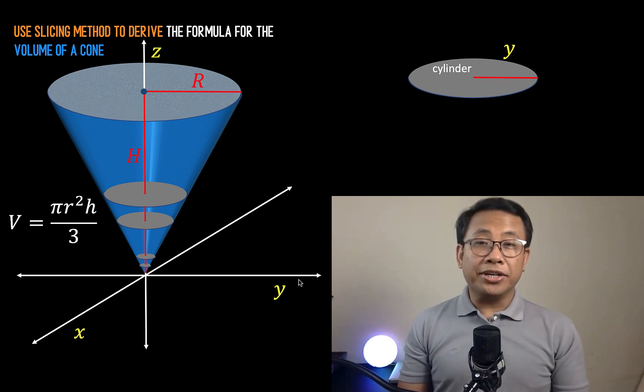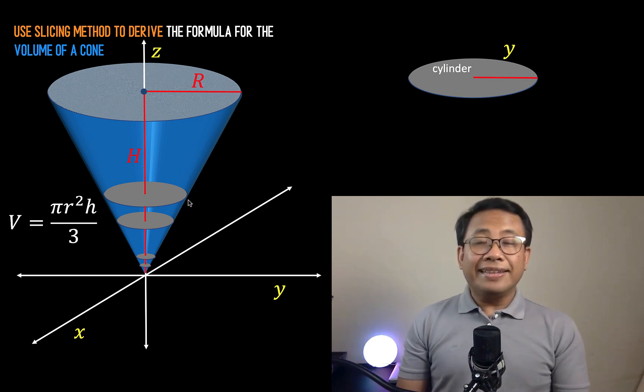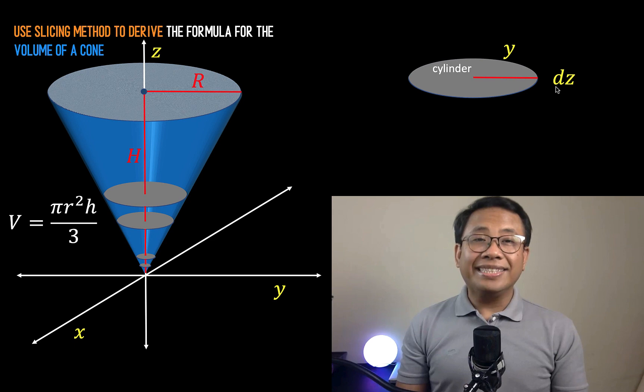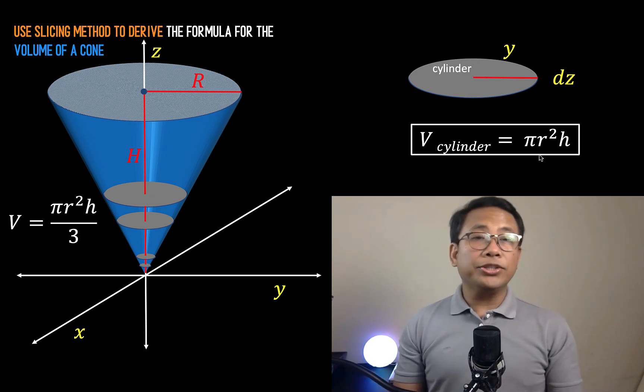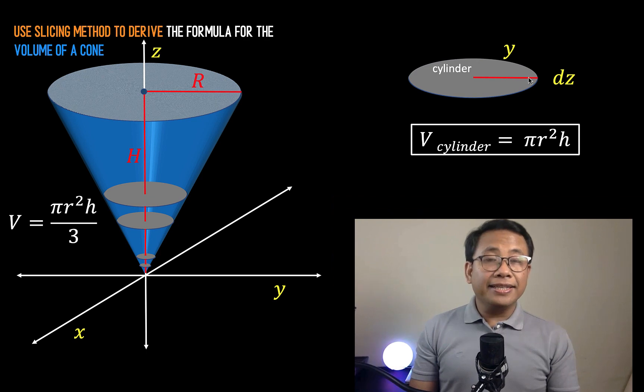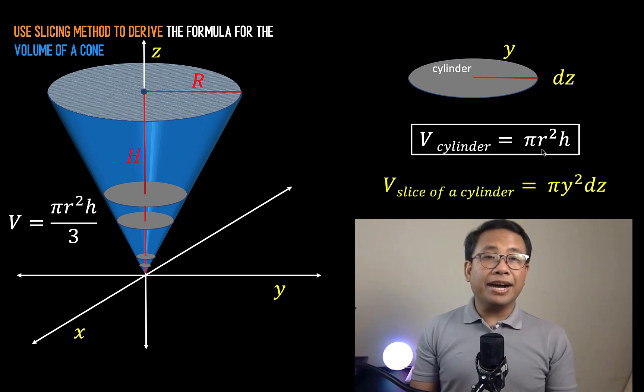Now, the thickness of this cylinder is theoretically so thin, and we call that as our infinitesimal dz. Then, let's recall the formula for the volume of a cylinder: the volume of a cylinder is equal to pi r squared h. In here, our r is this radius y. So let's substitute y for r to have pi y squared dz as our representation for the volume of this circular disk that we sliced from this cone.